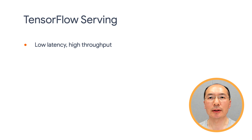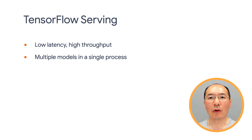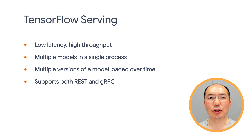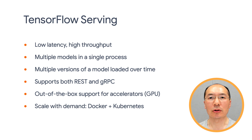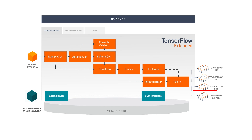TensorFlow Serving makes it easy to deploy new algorithms and experiments while keeping the same server architecture and APIs. With TensorFlow Serving, you can run multiple models in a single process, or you can run multiple versions of a model loaded over time. It supports both REST and gRPC and has out-of-the-box support for GPU. TensorFlow Serving also seamlessly works with Docker and Kubernetes to scale with demand. TF Serving is also part of TensorFlow Extended, which is a full suite of TensorFlow components to tackle the entire machine learning pipeline.